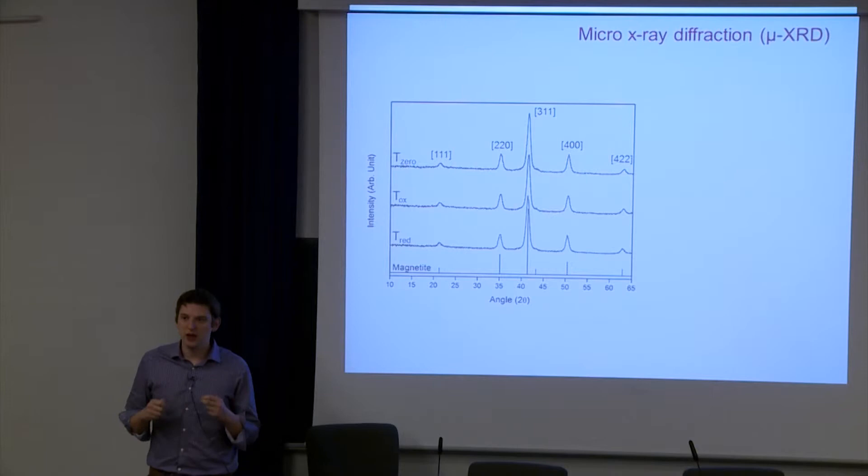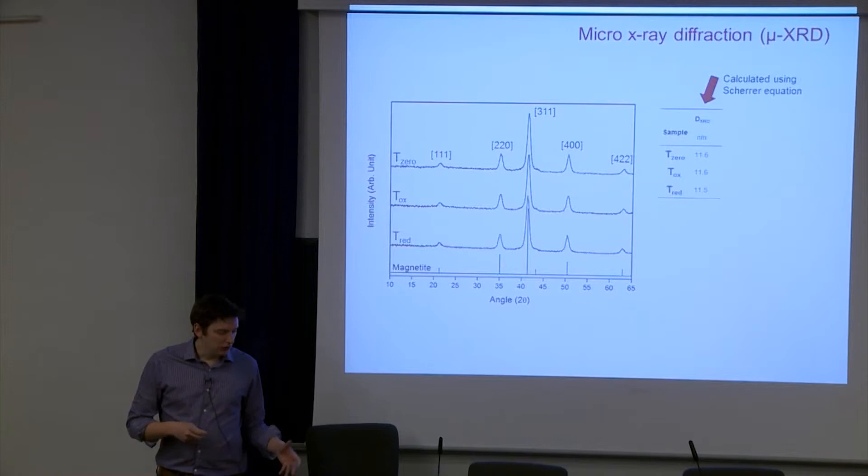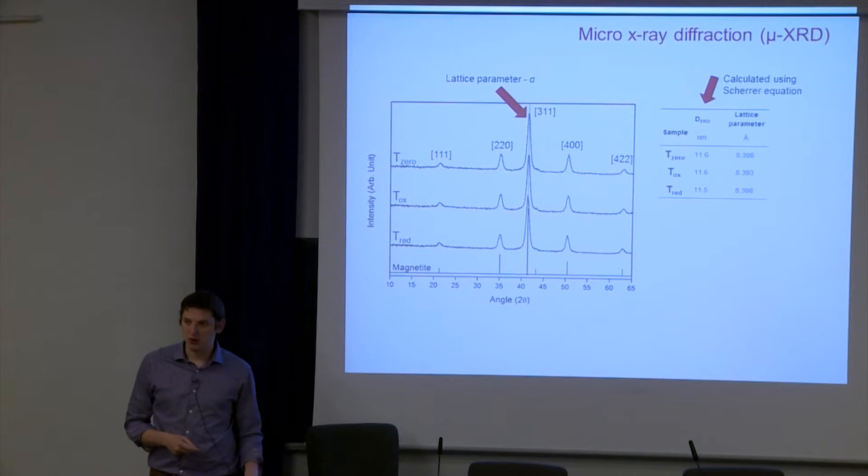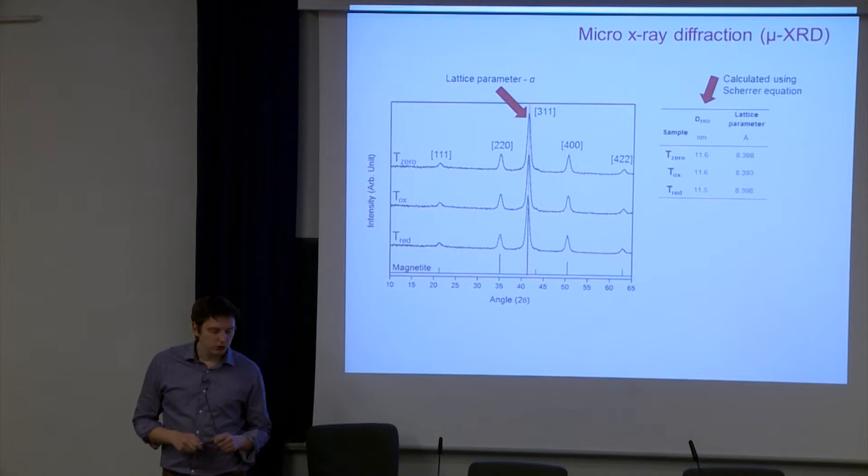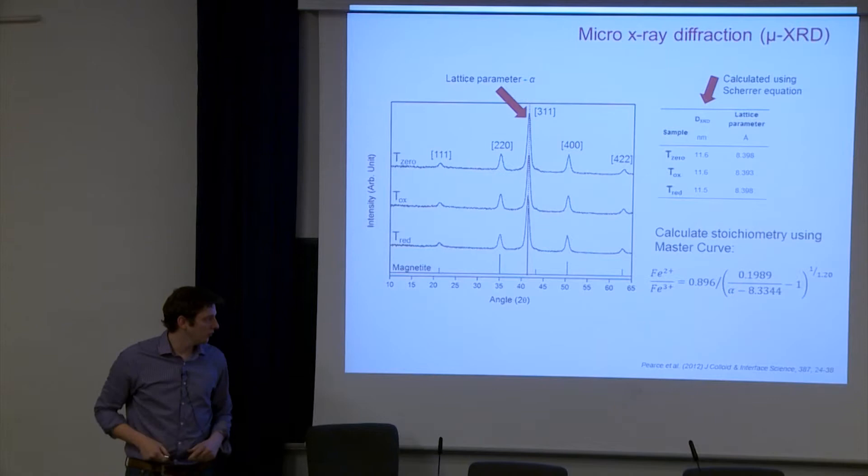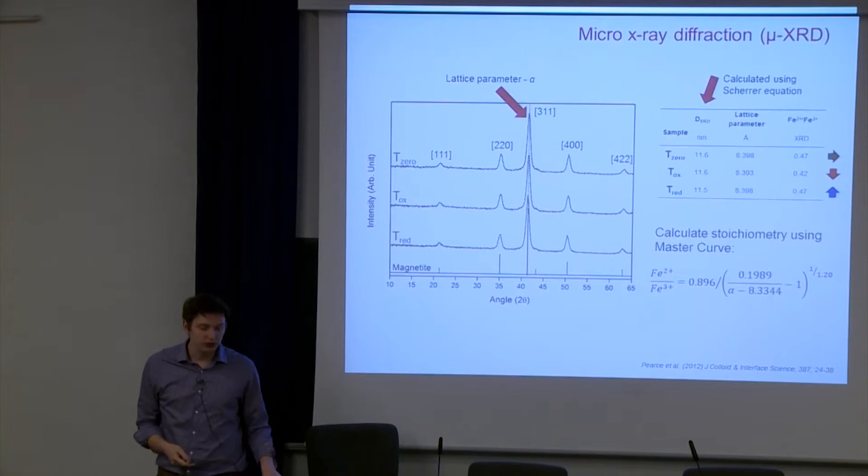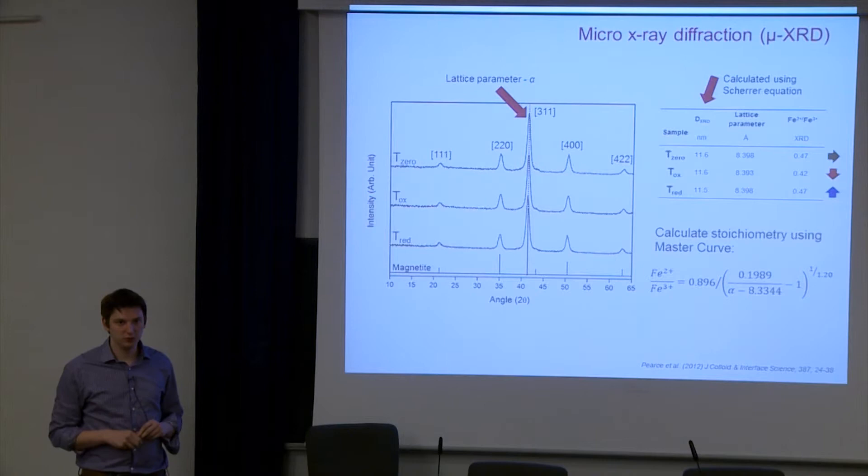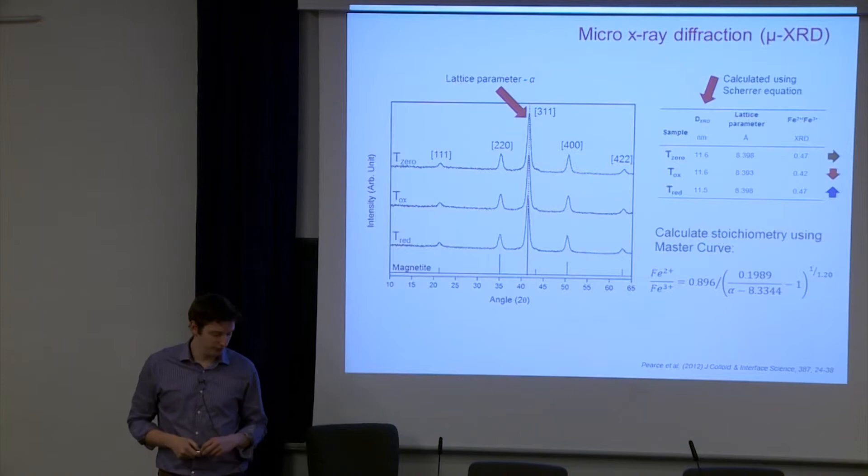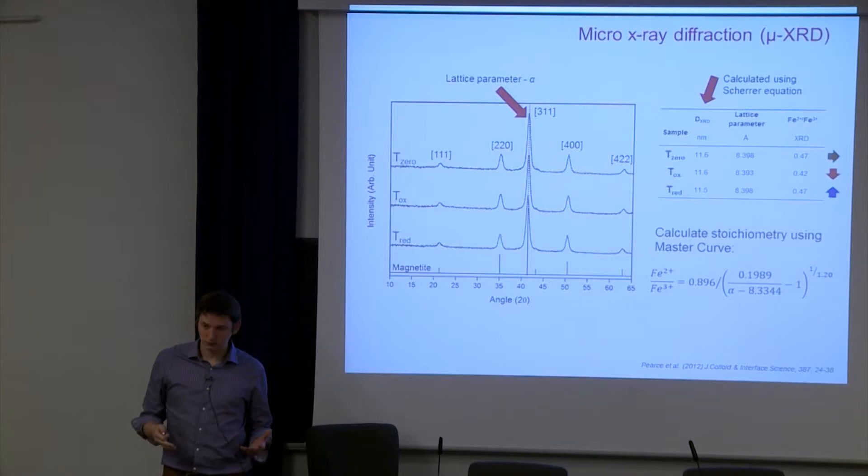When we calculate the average crystallite size with Scherrer equation, we see no significant differences. They remain around 11 to 12 nanometers. When we look at the lattice parameters, however, looking at the position of the 3-1-1 reflection, we actually do see a very minor decrease. This is important because there's an expression published by Carolyn Pearce a few years ago, the master curve. When we put the lattice parameter in, this alpha, we can get an estimate of the iron 2 to iron 3 ratio. When we do this for our values, the starting material has a value of around 0.47, compared to stoichiometric magnetite which should be 0.5. Perhaps it's a little bit oxidized to begin with. But when we oxidize the sample, we see this decrease to 0.42. Then when we re-reduce the sample, we get to 0.47.